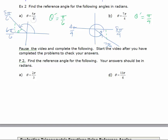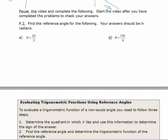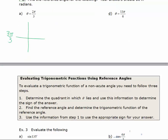Try the practice problem — pause the video and check your work. For 2π/3, I'll draw using pi as 3π/3. Since 2π/3 is short of 3π/3, I'm in the second quadrant. Going all the way to pi would be 3π/3, so the reference angle theta prime is the little acute angle: π/3.